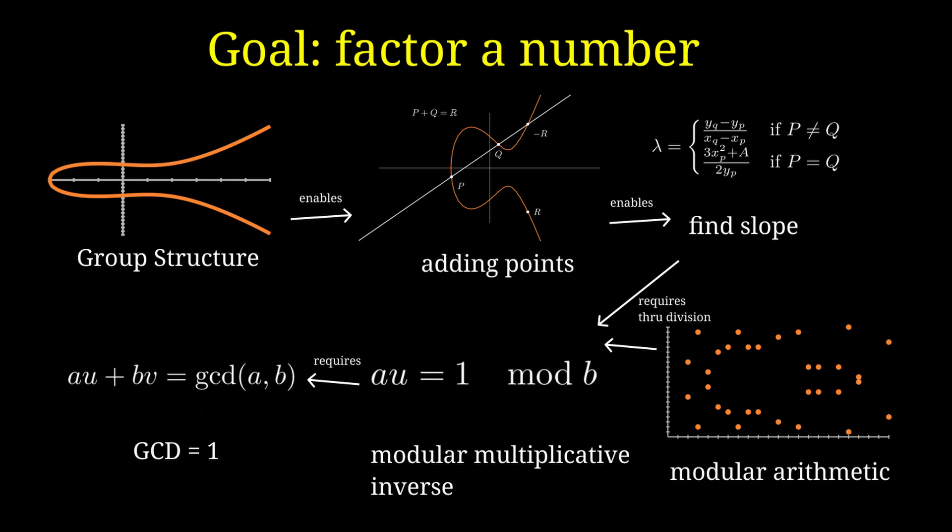At this point, I want to pause for a moment and contextualize everything we've talked about. Elliptic curves have group structure, which means that you can add points together. But this requires you to calculate the slope of a line going through one or more points. But remember, this algorithm requires looking at elliptic curves modulo a number. So when we do a division calculation to find a slope,